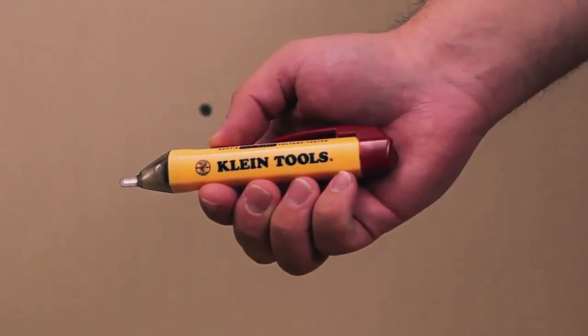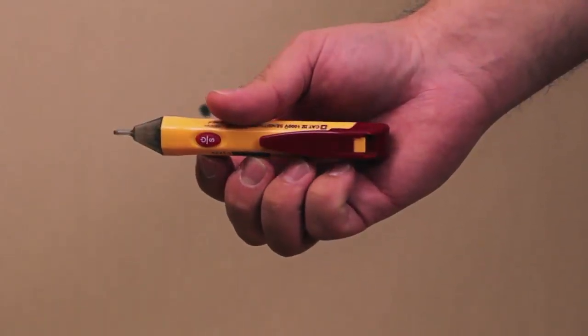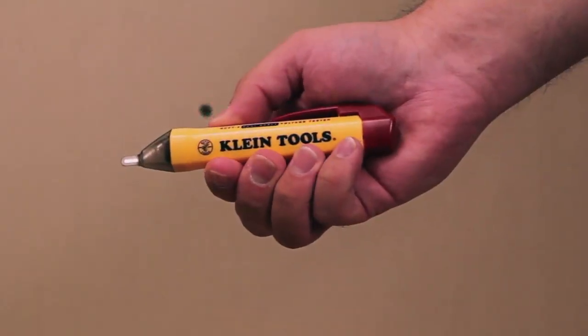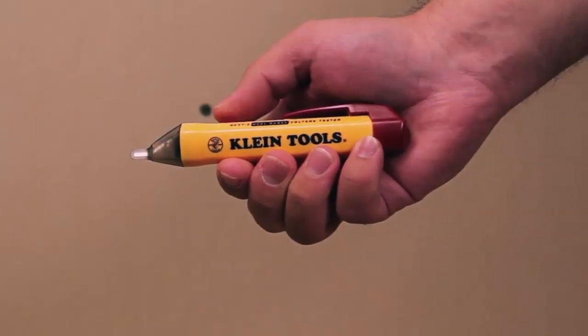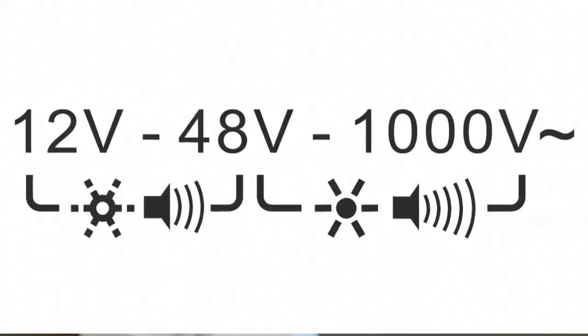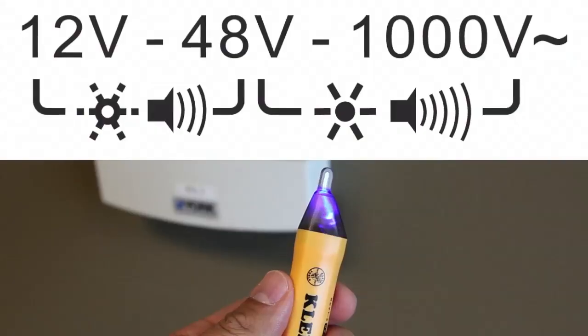Klein Tools is proud to introduce the NCBT2 Dual Range Non-Contact Voltage Tester. The NCBT2 is designed to detect and indicate both standard voltage between 48 and 1000 volts AC and low voltage between 12 and 48 volts AC.